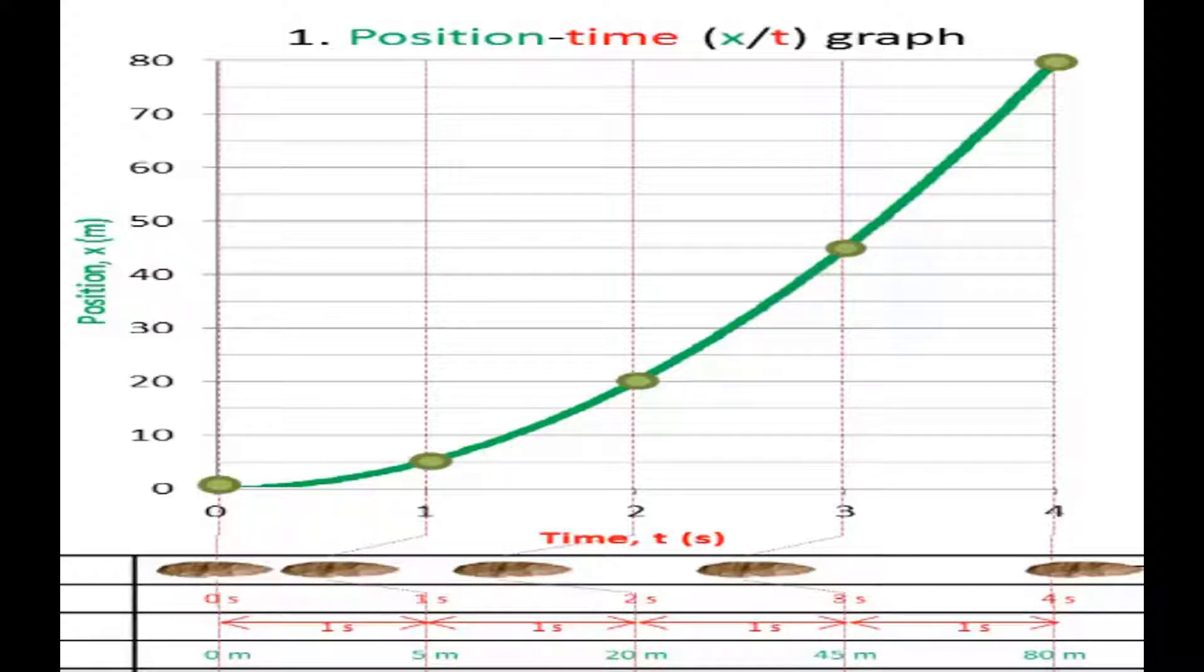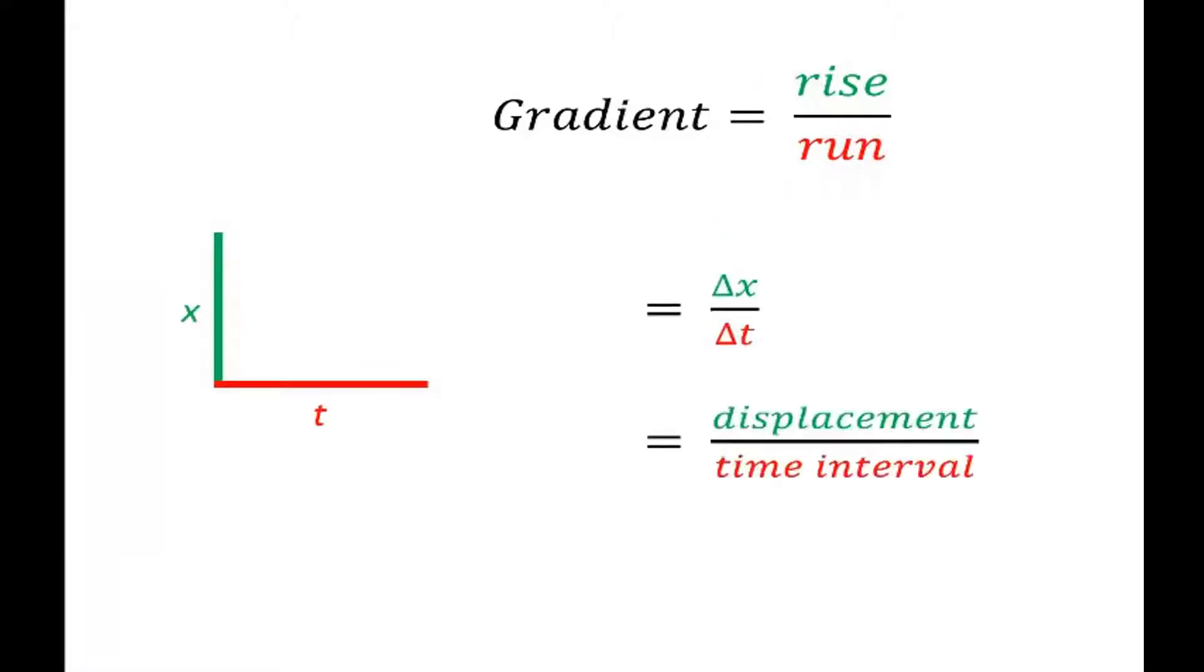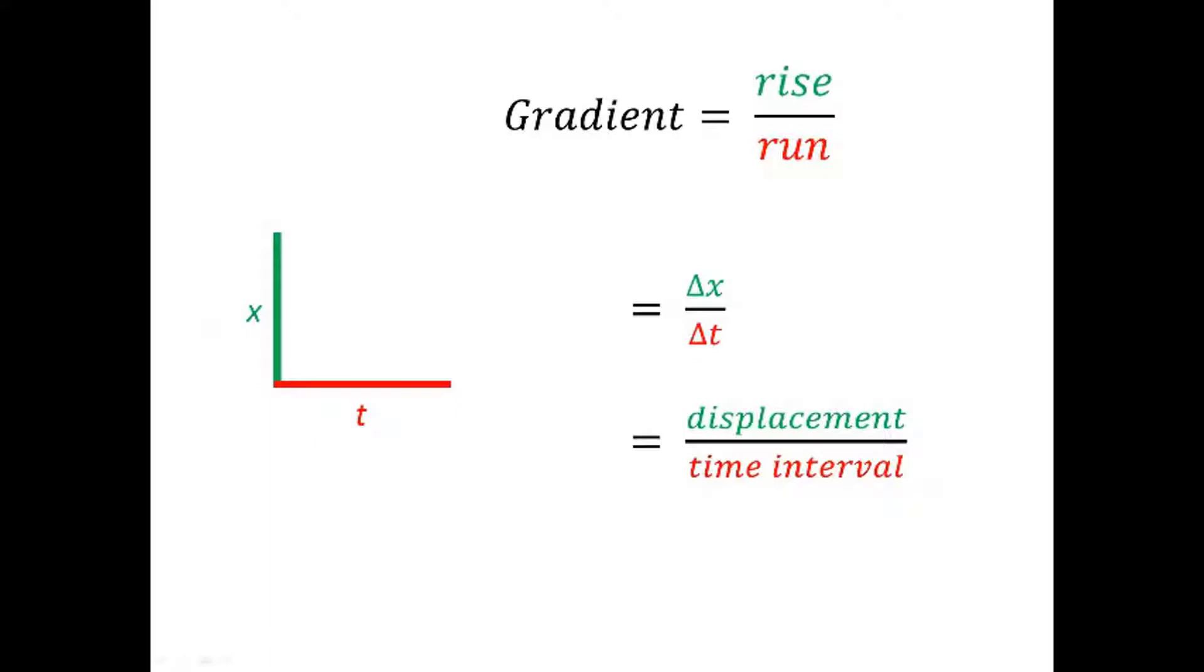What does the gradient of a position-time graph mean? Gradient always means rise over run. Rise for a position-time graph is change in position, delta x, displacement. Run is interval of time. So rise over run gradient for a position-time graph is delta x over delta t, which is velocity.